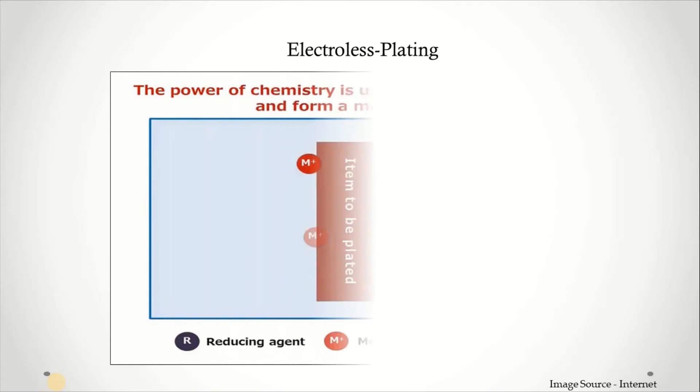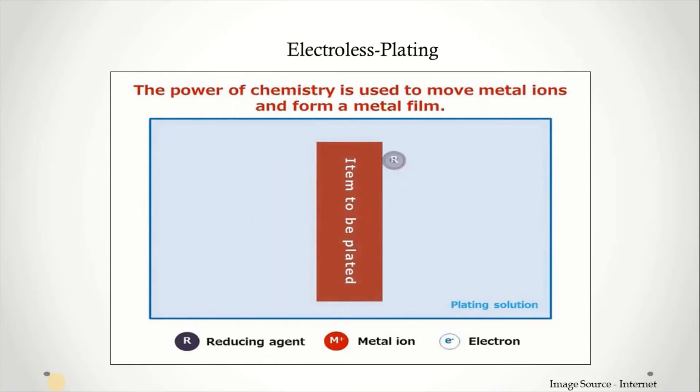Next one, electroless plating. It uses chemistry to move metal ions and form a metal film on the item to be plated. It is also known as chemical plating or autocatalytic plating. It is a class of industrial processes that creates metal coatings on various materials by chemical reduction of metal cations in a liquid bath.